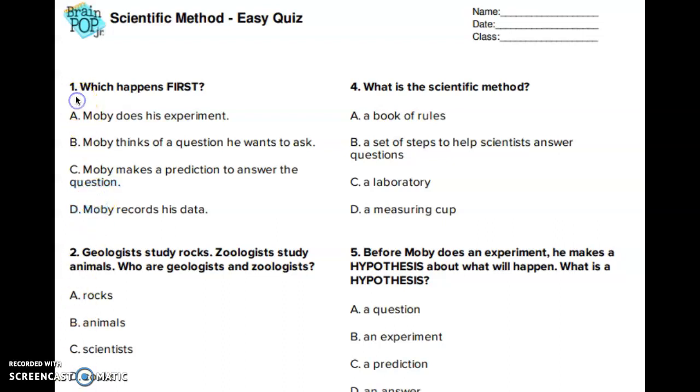Number 1. Which happens first? A. Moby does his experiment. B. Moby thinks of a question he wants to ask. C. Moby makes a prediction to answer the question. D. Moby records his data.